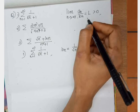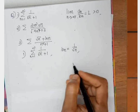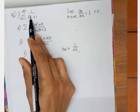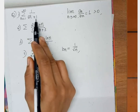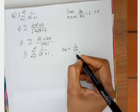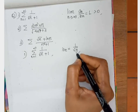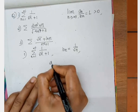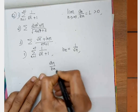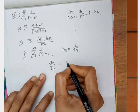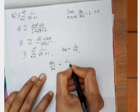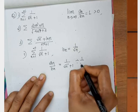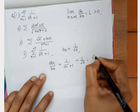We have to do some problems here. The first problem is sigma 1 by root(n+1). I am choosing bₙ equal to 1 by root n. Next I would like to take aₙ by bₙ, which is equal to 1 by root(n+1) divided by 1 by root n, that equals root n divided by root(n+1).